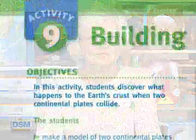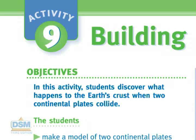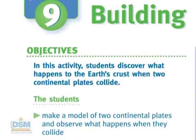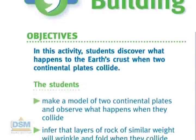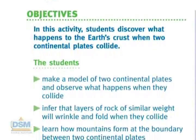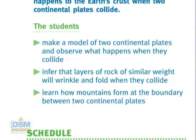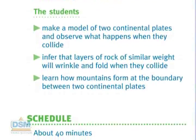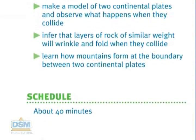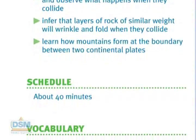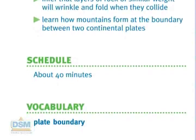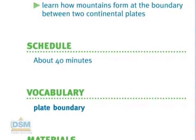When two continental plates collide, the continents weld into a single larger continent. In Activity 9, students discover what happens to the Earth's crust when two continental plates collide. Using a model of two continental plates, they infer that layers of rock of similar weight will wrinkle and fold when they collide. They discover that mountains form at the boundary between two continental plates.